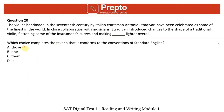Twentieth question: options are 'those,' 'one,' 'them,' 'it' — a pronoun question. Violins handmade by Italian craftsman Antonio Stradivari have been celebrated as some of the finest. In close collaboration with musicians, Stradivari introduced changes to the shape of a traditional violin — flattening some of the instrument's curves and making the instrument lighter overall. The pronoun replaces 'the instrument' (singular) as the object. 'Those' and 'them' are plural — eliminate. 'One' doesn't fit as object here. 'It' is singular and functions as the object: 'making it lighter overall.' Answer is option D.